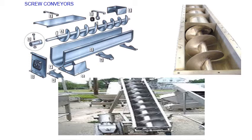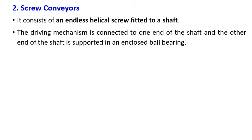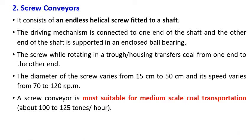The screw conveyor consists of an endless helical screw fitted to a shaft. The driving mechanism is connected to one end of the shaft and the other end is supported in an enclosed ball bearing. The screw, while rotating in the trough housing, transfers material from one end to the other. The diameter of the screw varies from 15 centimeters to 50 centimeters and its speed varies from 70 to 120 RPM. The screw conveyor is most suitable for medium-scale coal transportation, around 100 to 125 tons per hour.